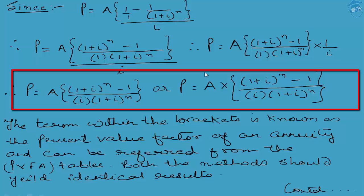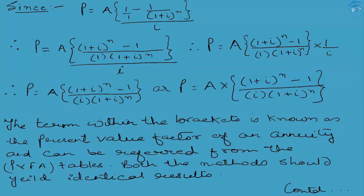Now students, take a closer look at the term within the curly brackets — that is [(1 + i)^n - 1] / [i × (1 + i)^n] — not including the A part. The term within these two curly brackets is known as the Present Value Interest Factor of an Annuity. I once again repeat: this particular term within the curly brackets is known as the Present Value Interest Factor of an Annuity.